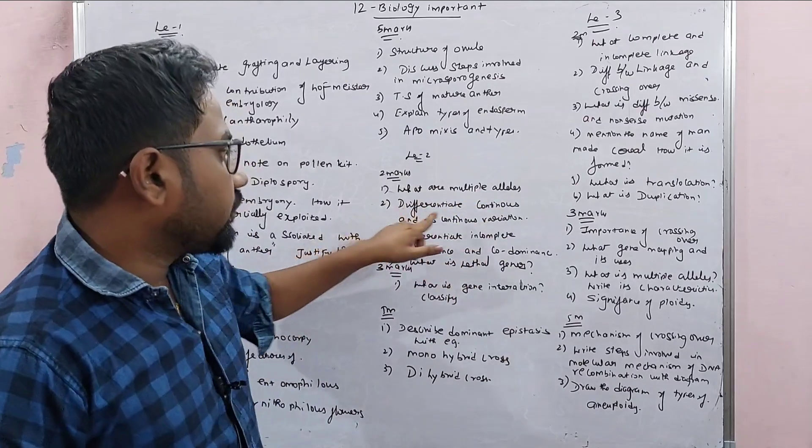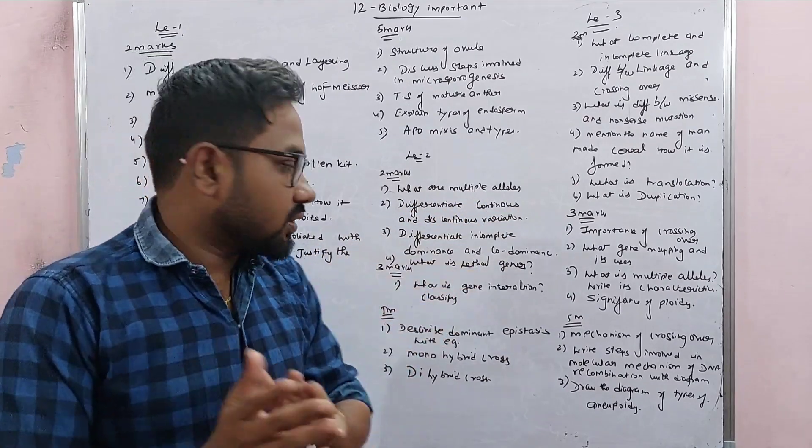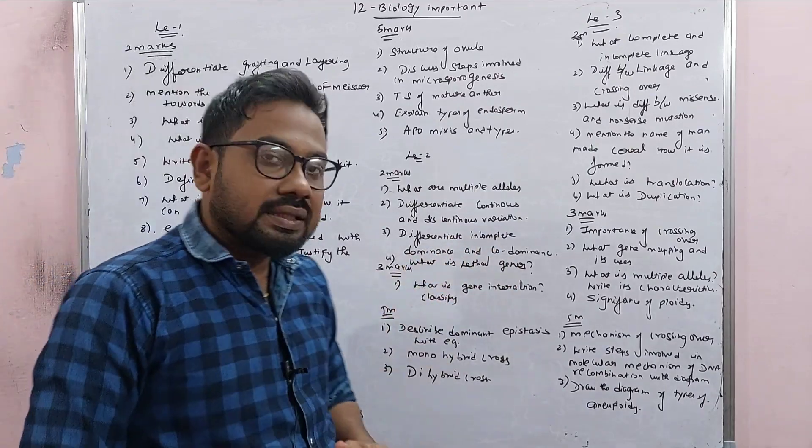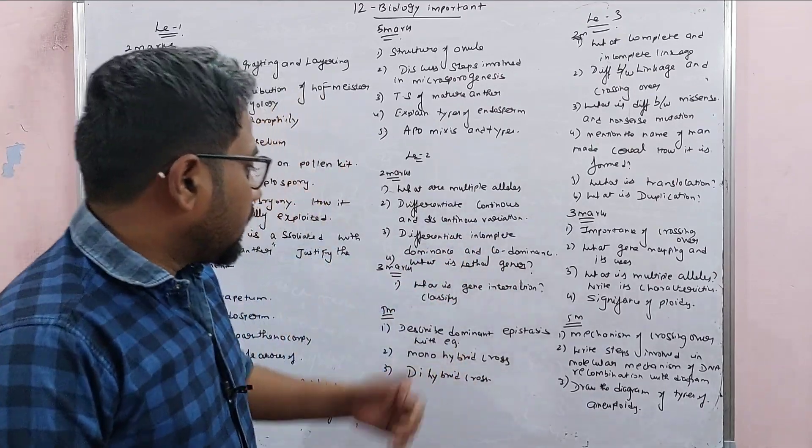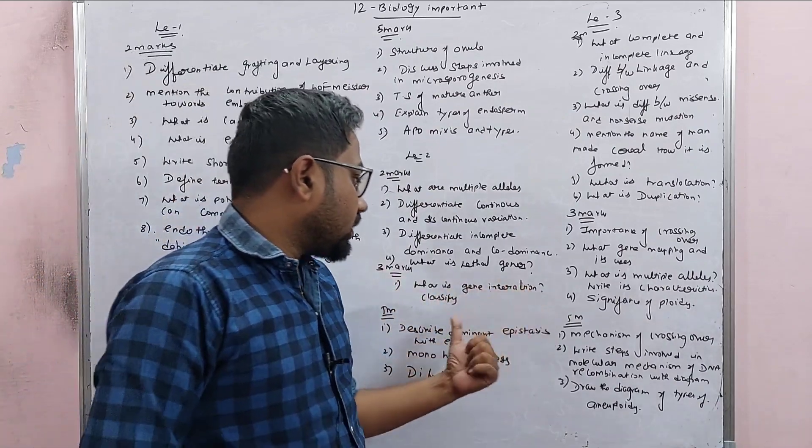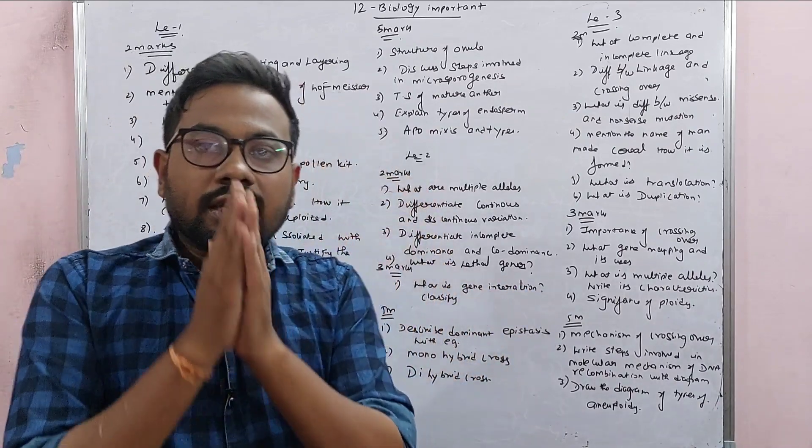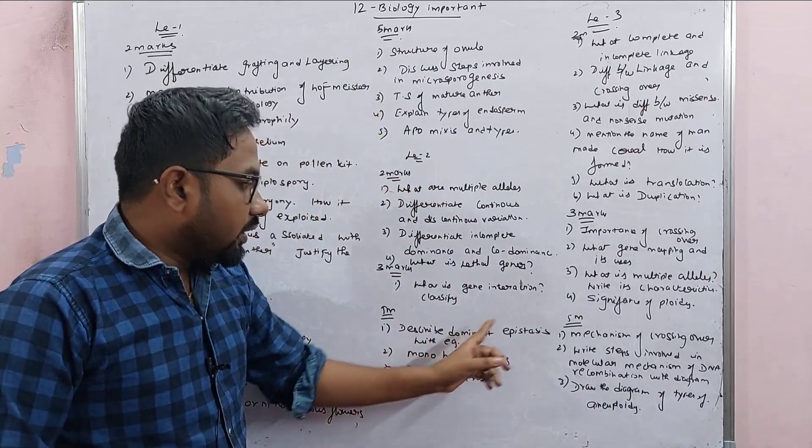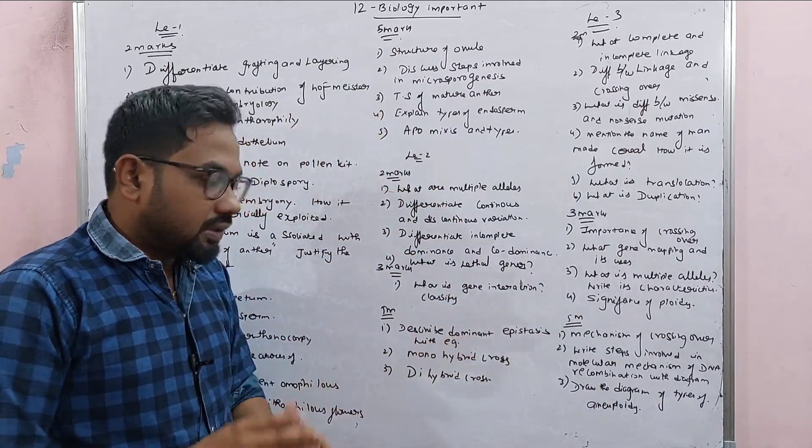Lesson 2, 2 Mark: What are Multiple Alleles? Differentiate Continuous and Discontinuous Variation. Differentiate Incomplete Dominance and Co-Dominance. What is Lethal genes? What is Gene Interaction? Classification. One 3 Mark question. Describe Dominant Epistasis with Example.